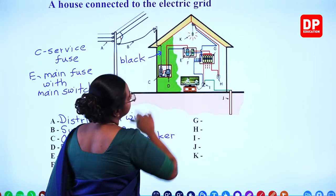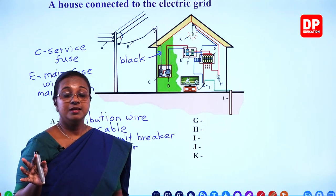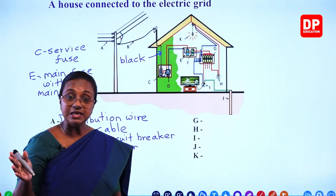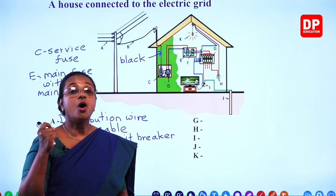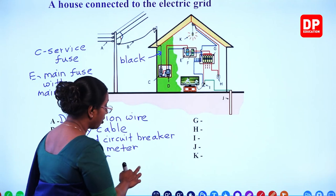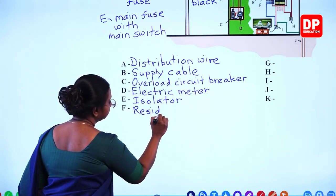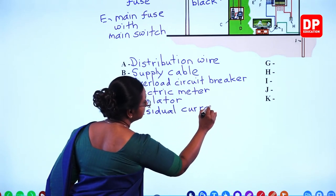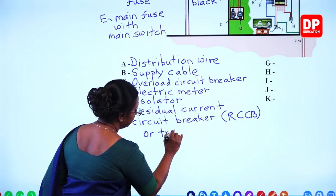From the isolator, electricity is supplied to component F, which is the trip switch — also known as the residual current circuit breaker or RCCB. If there is an electric leakage in an appliance, the trip switch automatically switches off the power supply to the household. That is the function of the RCCB or trip switch.